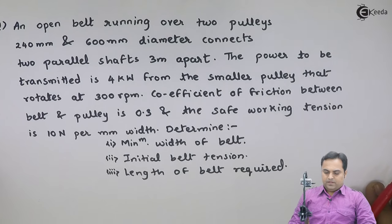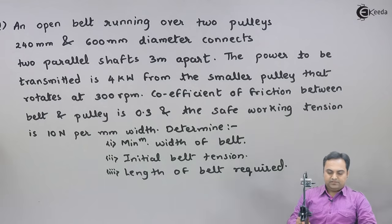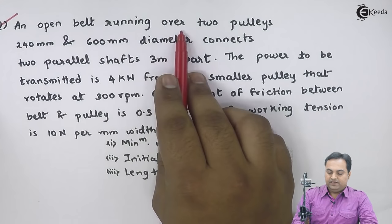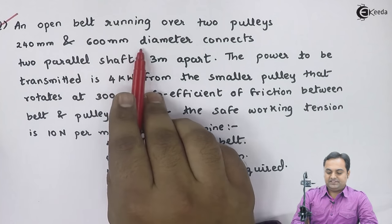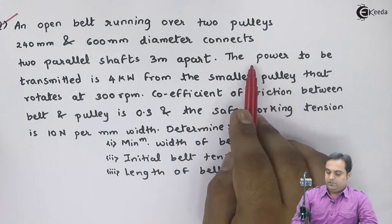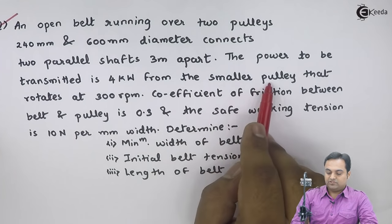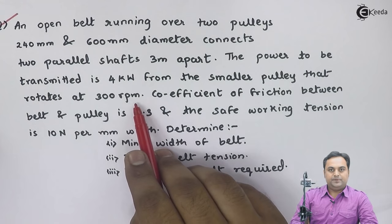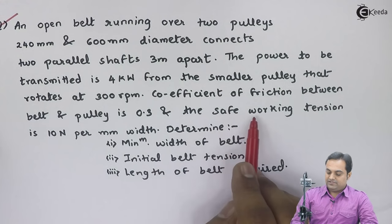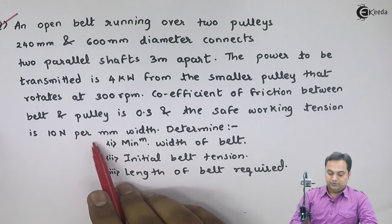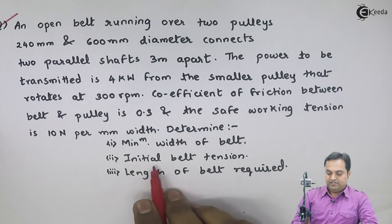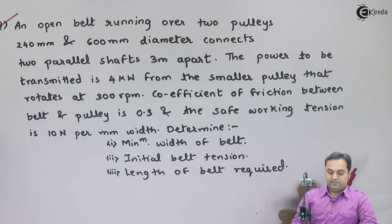Let us take some problems on belt drives. An open belt drive running over two pulleys 240 mm and 600 mm diameter connects two parallel shafts 3 meters apart. The power to be transmitted is 4 kilowatts from the smaller pulley that rotates at 300 rpm. Coefficient of friction between belt and pulley is 0.3 and the safe working tension is 10 Newton per mm width. Determine: number one minimum width of belt, second initial belt tension, and third length of belt required.